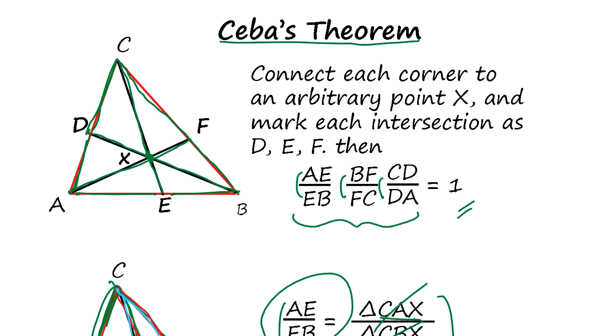So we take an arbitrary point in the middle of a triangle, and you connect from corner to that point and define the intersecting point. The ratio, you multiply all together, become one.